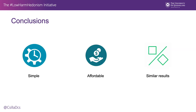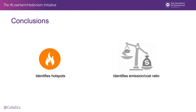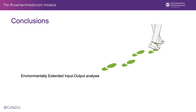Environmentally extended input-output analysis is a promising alternative for calculating carbon emissions of tourist businesses because it's simple, affordable, and leads to very similar results as more complicated and expensive methods. It also points to areas with the highest potential for improvement and identifies the emission-cost ratio of each input in the process. These two insights can inform product planning, carbon management, and procurement policy that consider both cost reduction and sustainability performance. In sum, environmentally extended input-output analysis provides an invaluable opportunity for small and medium-sized businesses to engage with a sustainability agenda via footprint analysis.